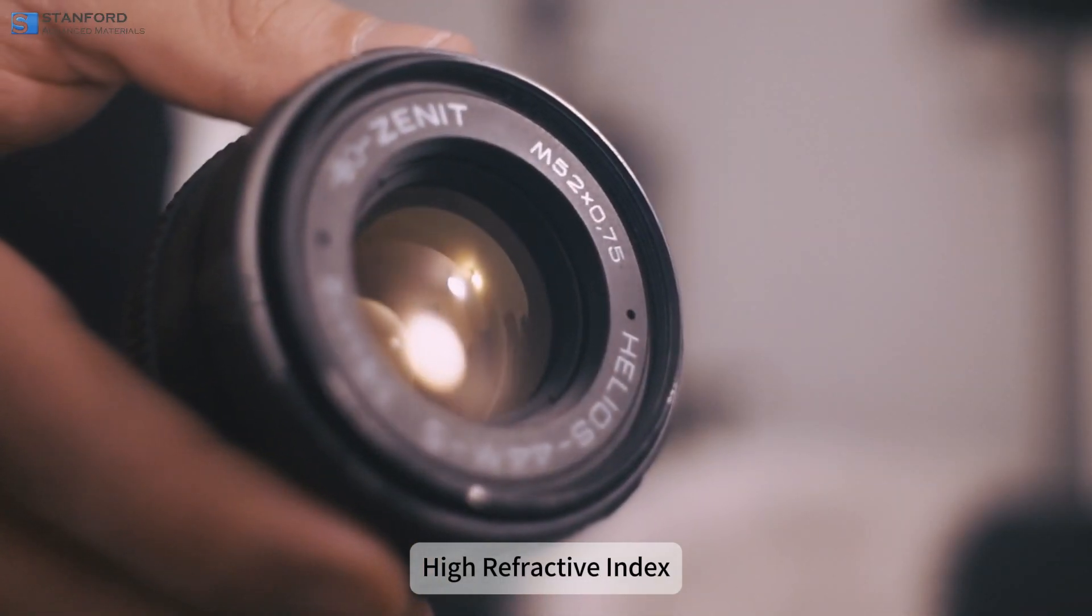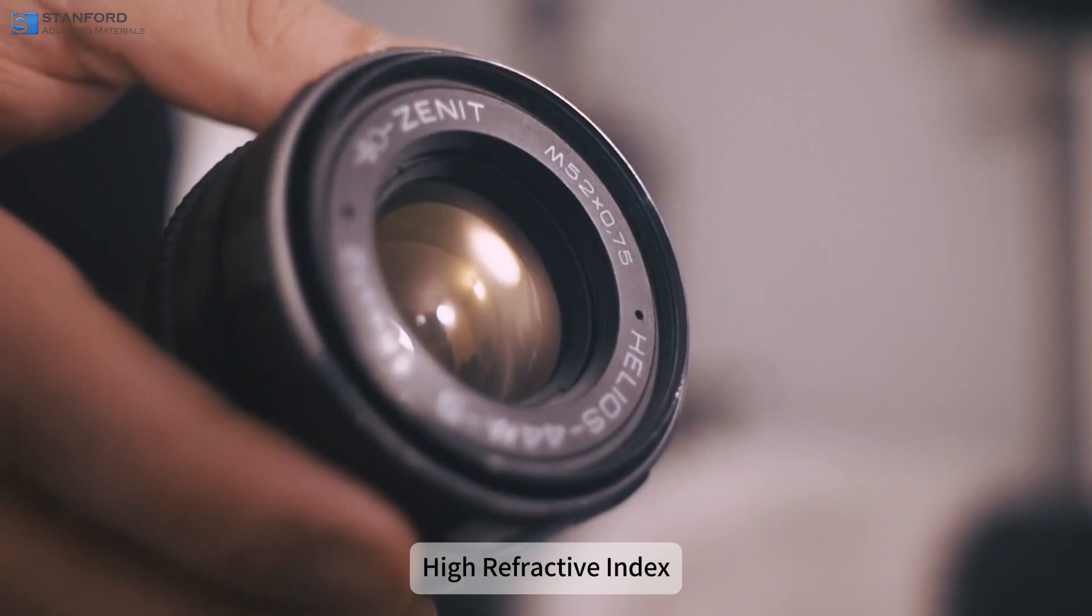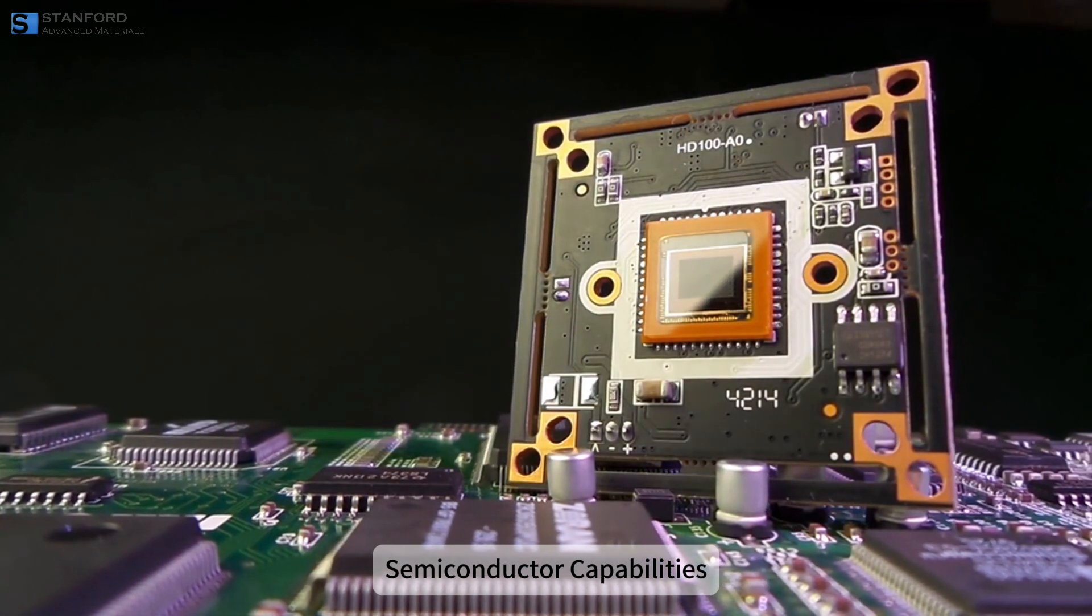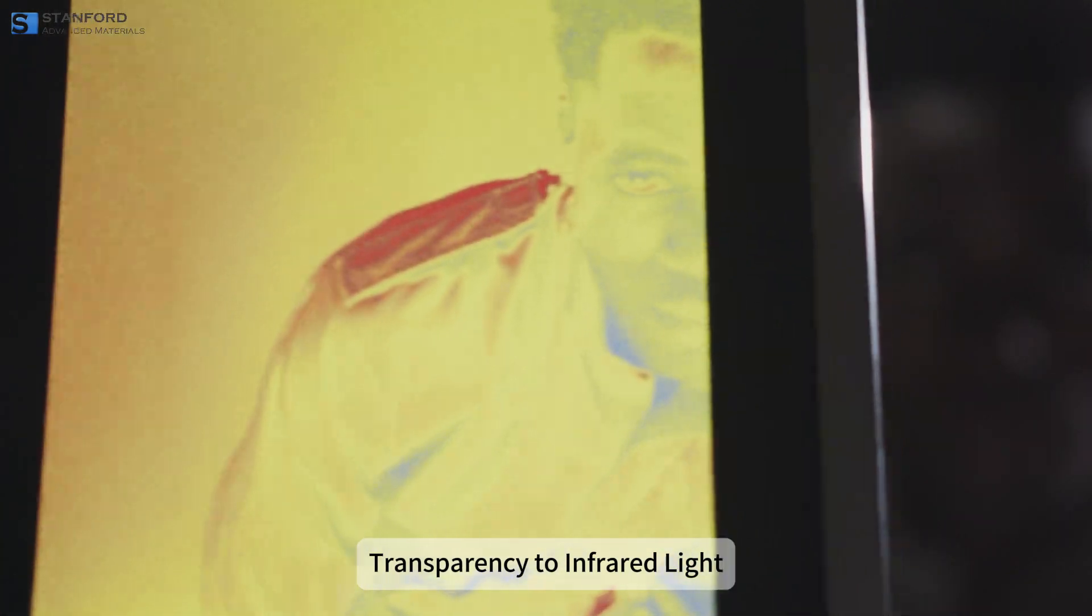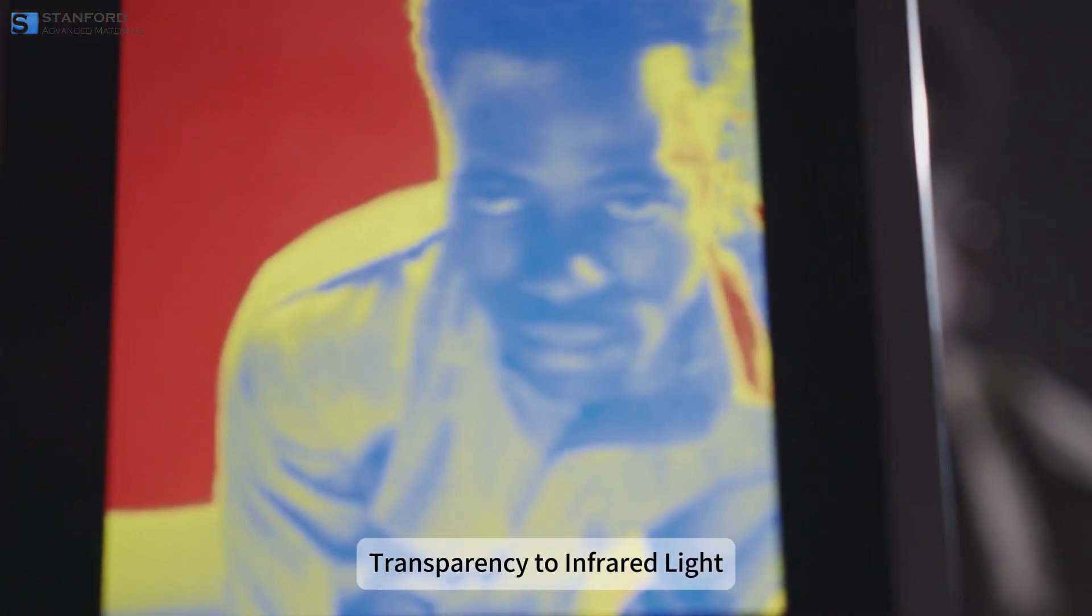It has a high refractive index, which is great for lenses in cameras and optical devices. It works well as a semiconductor, so it's essential for transistors and integrated circuits. Plus, it's transparent to infrared light, making it perfect for thermal imaging and infrared sensors.